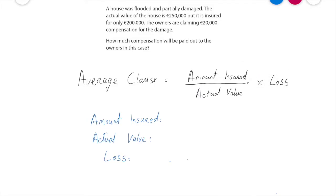In other words, how much they insured over what the value of the asset is, multiplied by how much they've lost. The first thing you should always do in a question like this is write out the formula — that way the examiner can give you marks for it. Even if you use the wrong formula you can still possibly pick up marks.